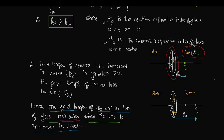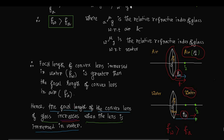Fa is the focal length of the lens in air, and Fw is the focal length of the lens in water, where Fw > Fa. The increase in focal length is ΔF, and Fw = Fa + ΔF.